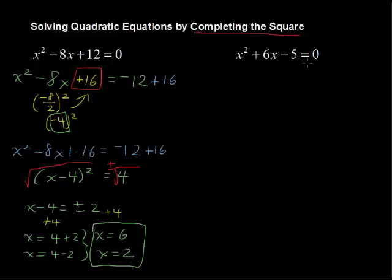You could pause it now and try to do this next example. And then, you can come back, and here I go with this next example. We want to do whatever we can to get all of our constant terms on the right-hand side, so I'll add 5 to each side, and be left with x squared plus 6x equals 5.